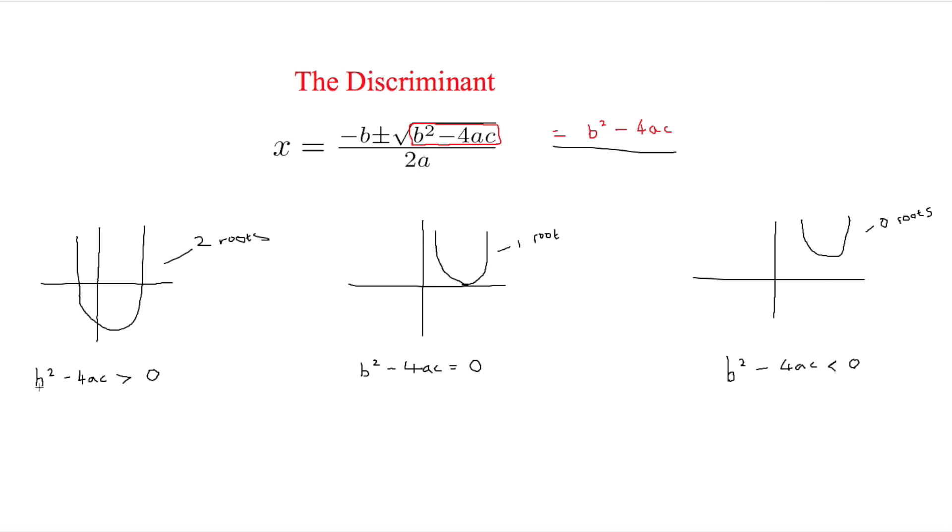The discriminant is b squared minus 4ac. When the discriminant is more than zero, it means you've got two roots. I'll show you some examples of this later on. When it's equal to zero, that means you've only got one root, and when it's less than zero, that means you have zero roots.